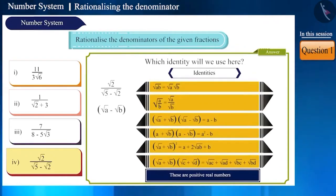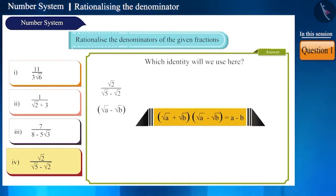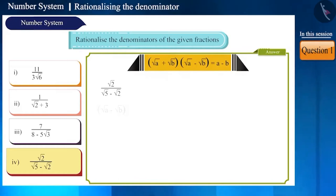Now, can you guess which identity we will use here? Yes. Here, we will use this identity: root a plus root b multiplied by root a minus root b is equal to a minus b. Pause the video and try to solve it. The answer to this question will be as follows.